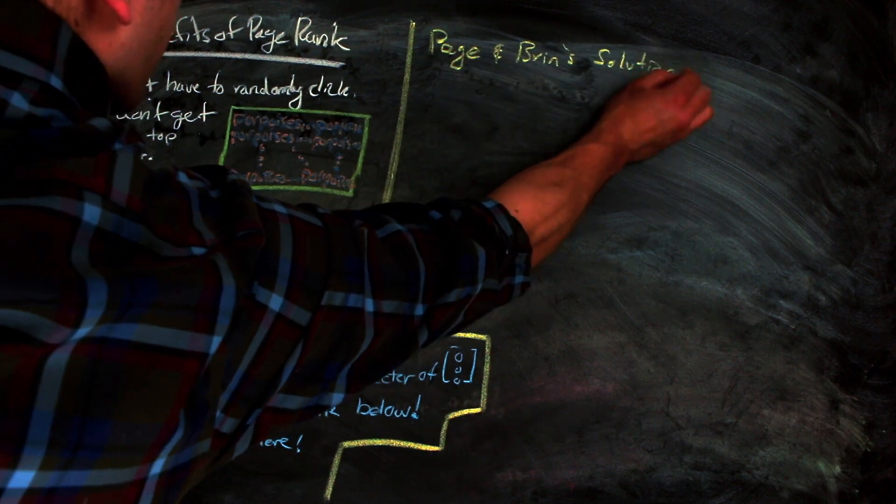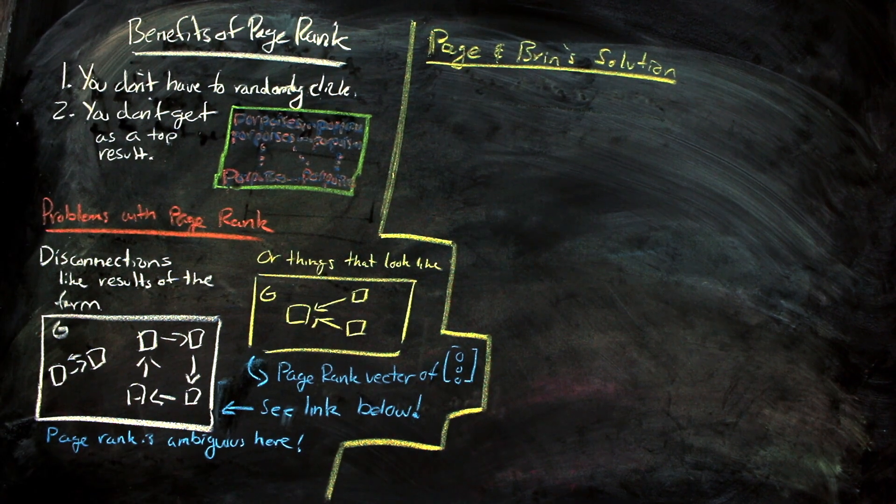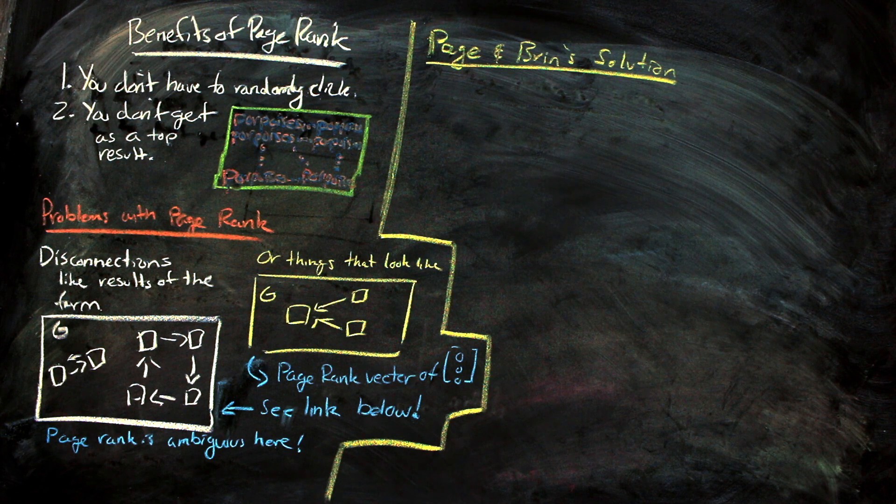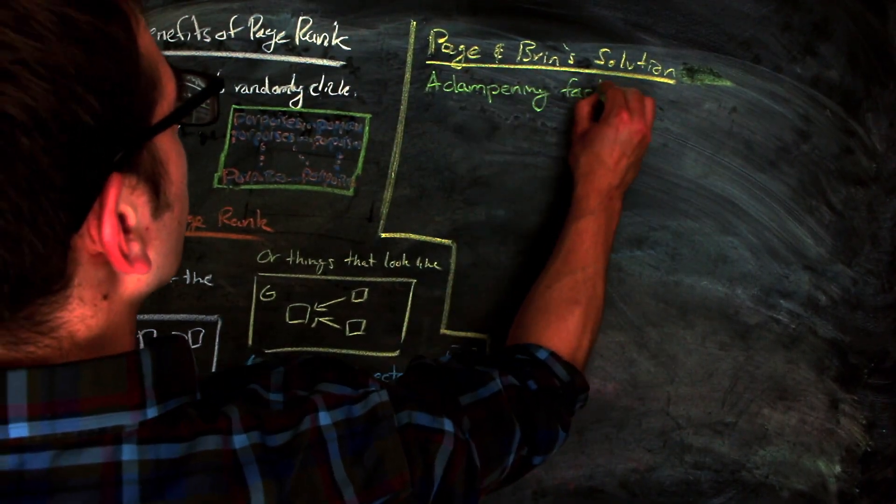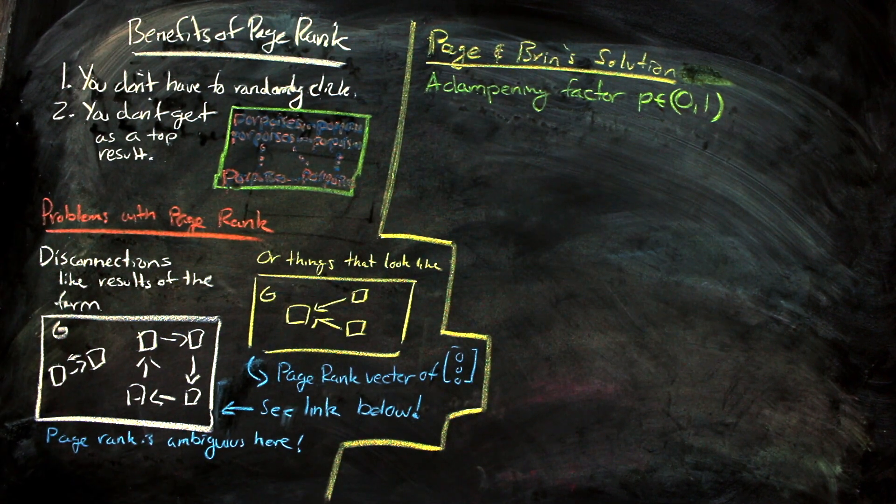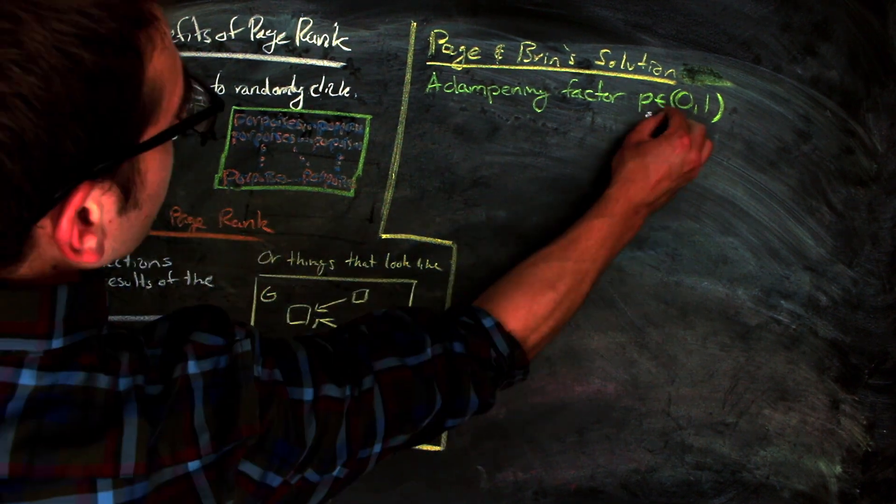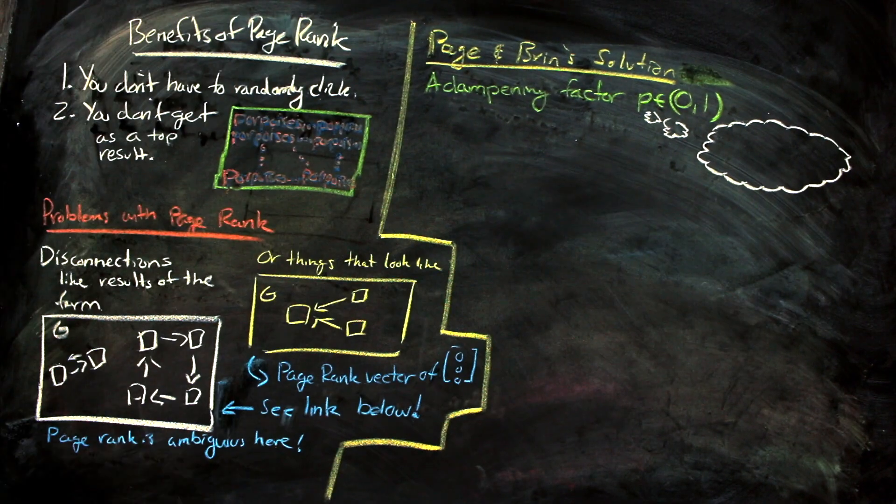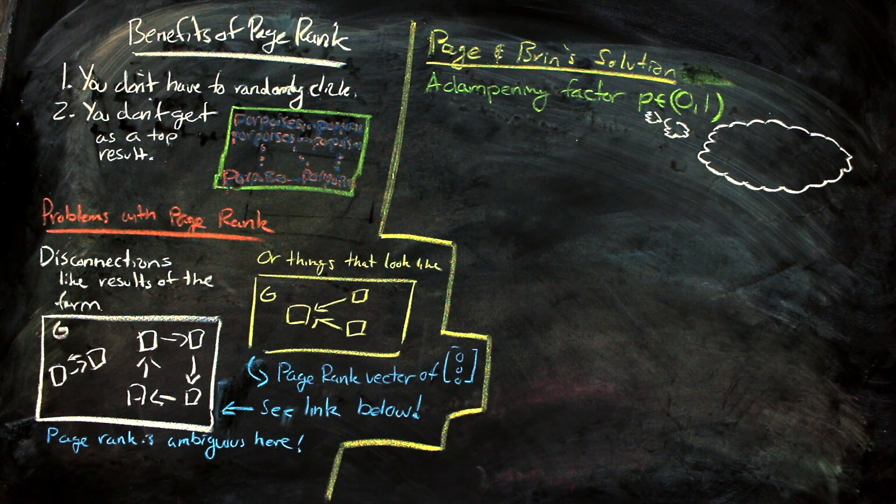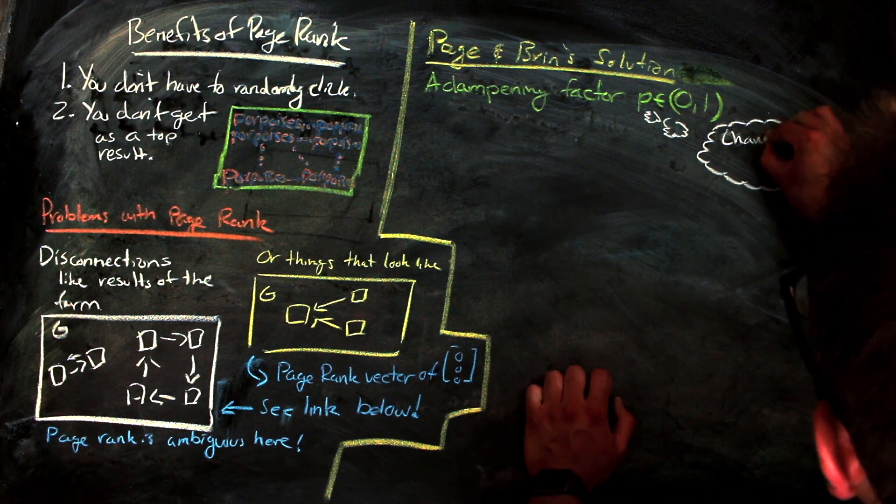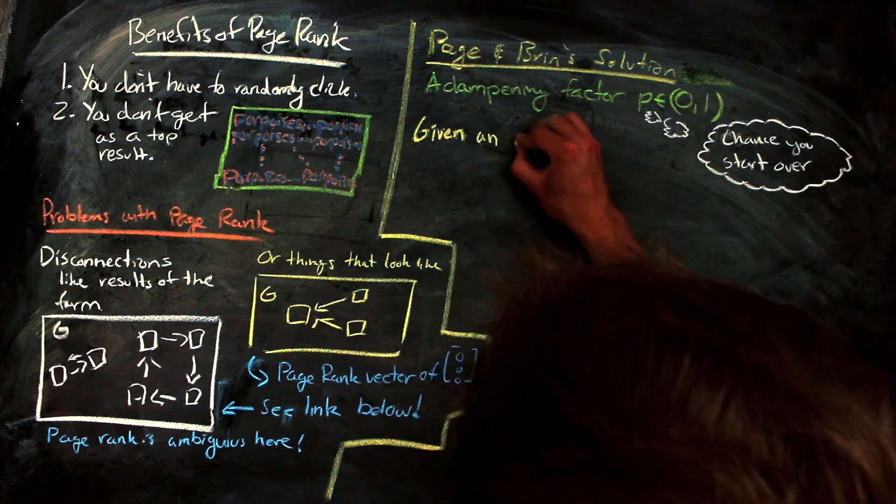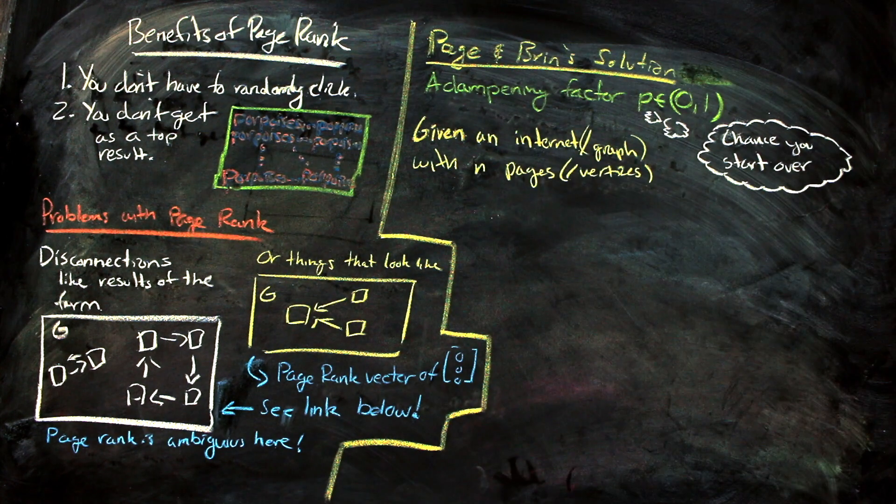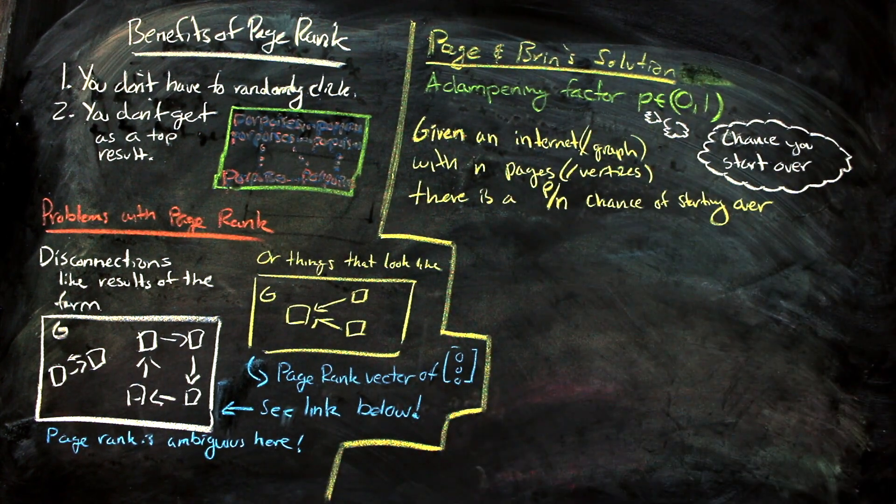In order to fix these issues, we need to make sure that whatever internet or graph we are working with is connected. And so we're going to need to introduce Page and Bryn's solution, a dampening factor P, which is strictly between zero and one. To motivate this, one can think of P as the probability that on some page, one decides to just directly type in an address or just start over the search with another browser that opens up randomly to another page. So given an internet of n pages, there is a P over n chance that one decides to start over.